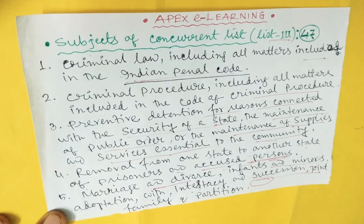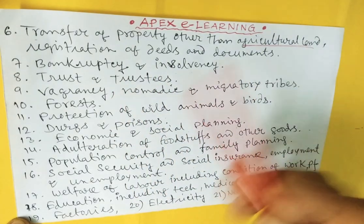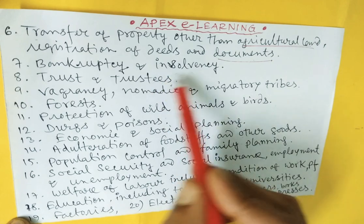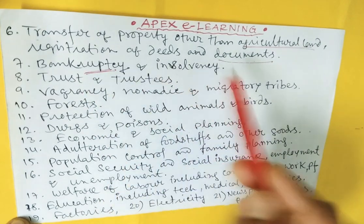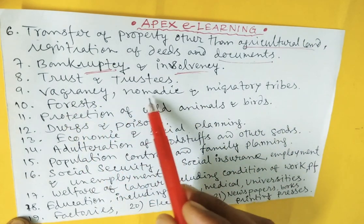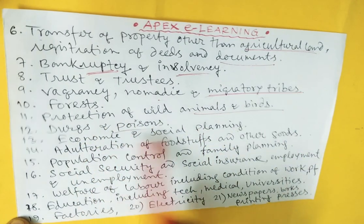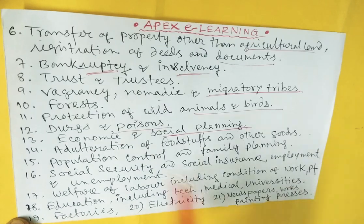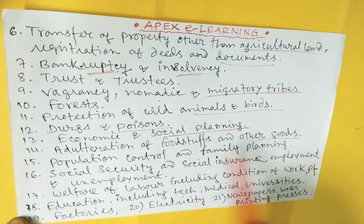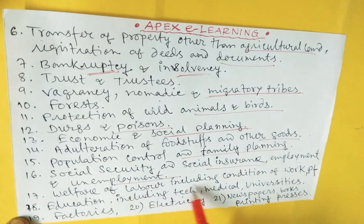Transfer of property other than agricultural land. Registration of deeds and documents. Bankruptcy and insolvency. Trusts and trustees. Vagrancy, nomadic and migratory tribes. Forest. Protection of wild animals and birds. Drugs and poisons. Economic and social planning. Adulteration of foodstuffs and other goods. Population control and family planning. Social security and social insurance. Employment and unemployment. Welfare of labour, including conditions of the workplace.